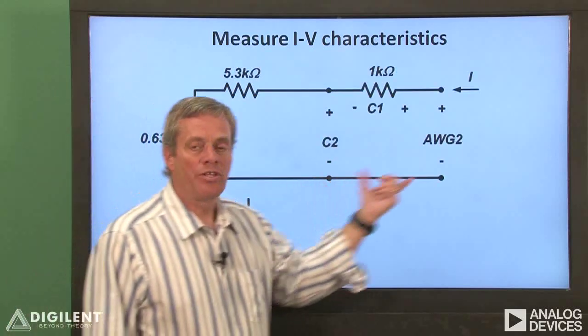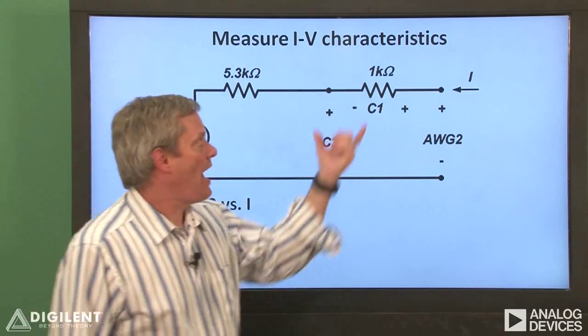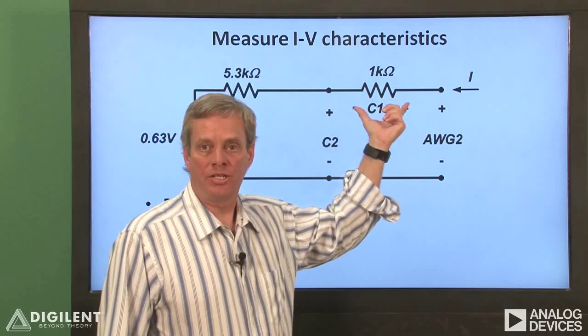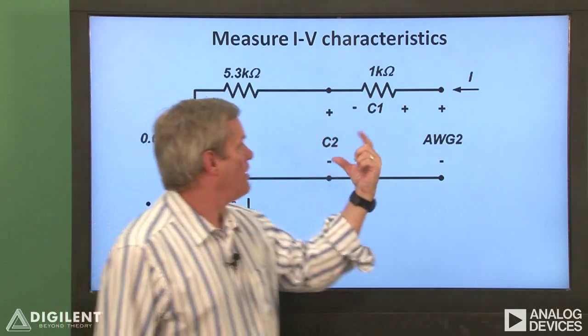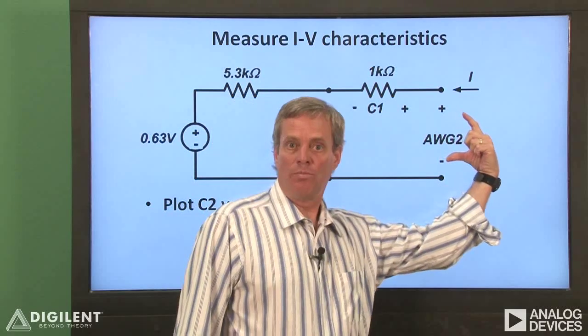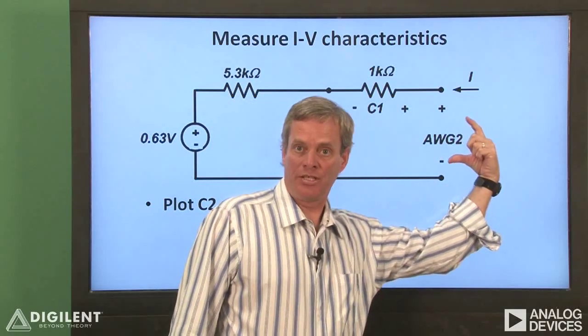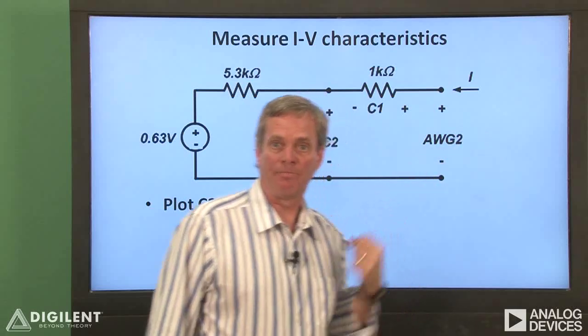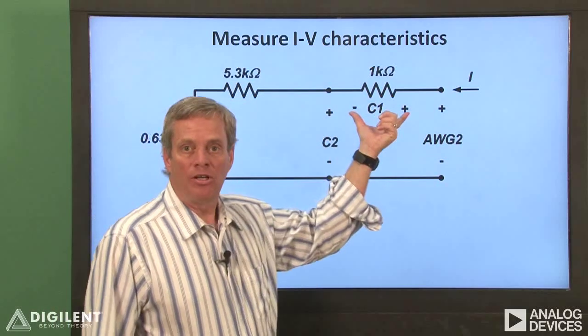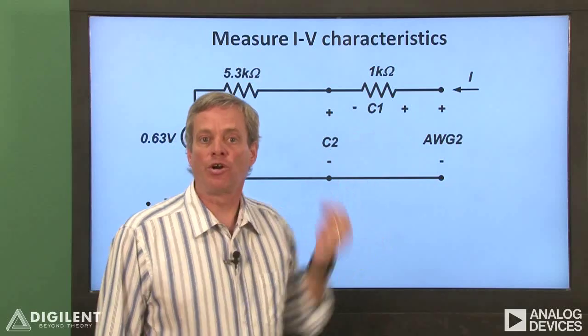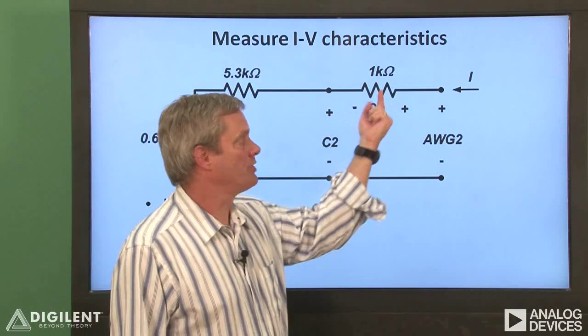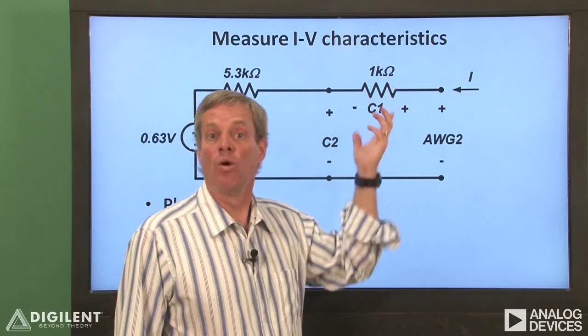The circuit we're going to use to do this is shown here. We're going to add a 1 kilohm resistor in series with the Thevenin circuit, use channel 2 of our waveform generator to apply a triangular voltage signal to the terminals of the overall circuit. Channel 1 of our oscilloscope will be used to measure the voltage across this resistor, so the current is just the channel 1 voltage divided by this resistance, 1000.